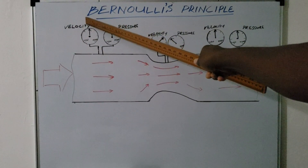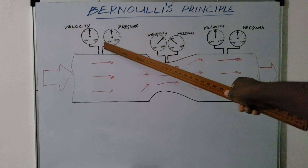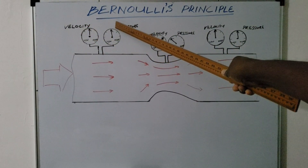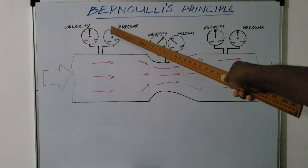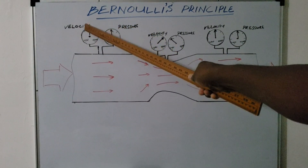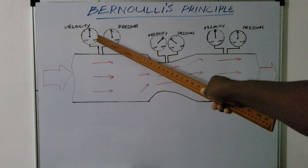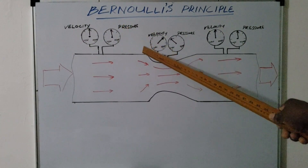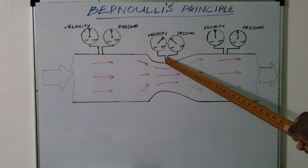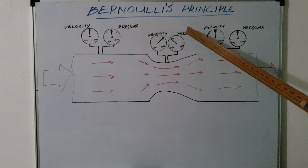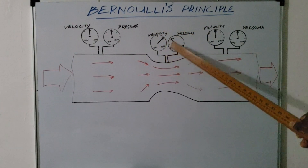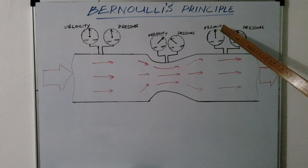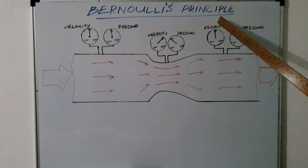There are two gauges connected to the entrance of the tube: a velocity gauge indicating velocity and a pressure gauge indicating pressure. You can see the low side and the high side of the pressure gauge. Two additional gauges are mounted at the venturi area of the tube, and another two gauges at the end of the tube — a velocity gauge and a pressure gauge.